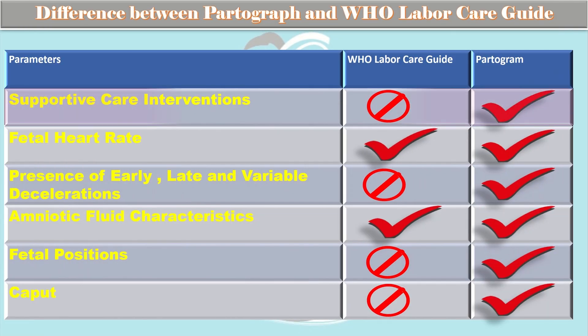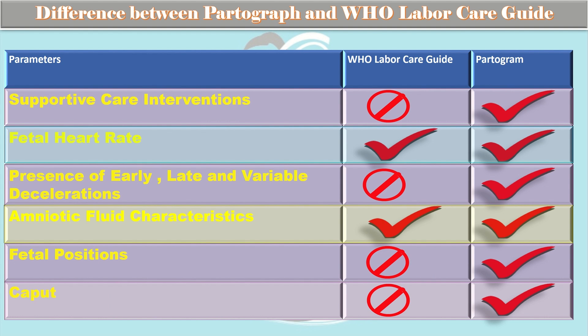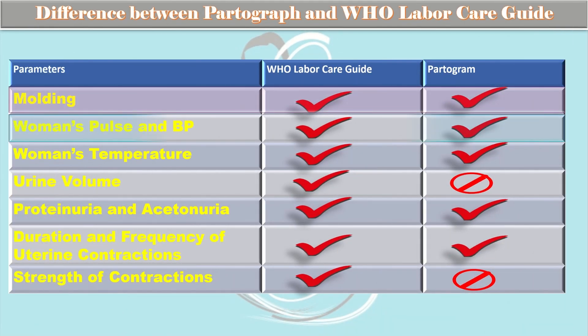The fetal heart rate and amniotic fluid characteristics are mentioned in the WHO Labor Care Guide. However, the supportive care interventions, presence of early, late, and variable decelerations, fetal positions, and caput are not mentioned in the WHO Labor Care Guide — while all of these are explained in the partograph.